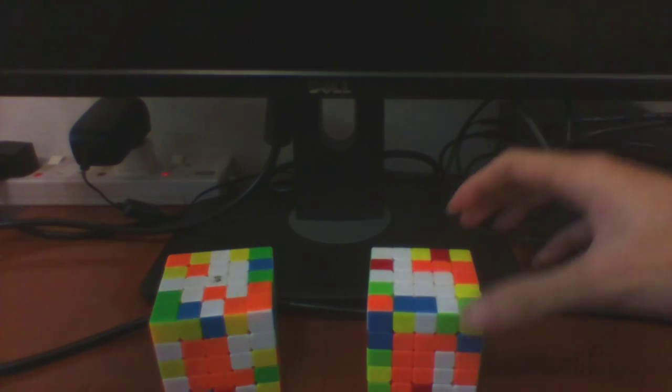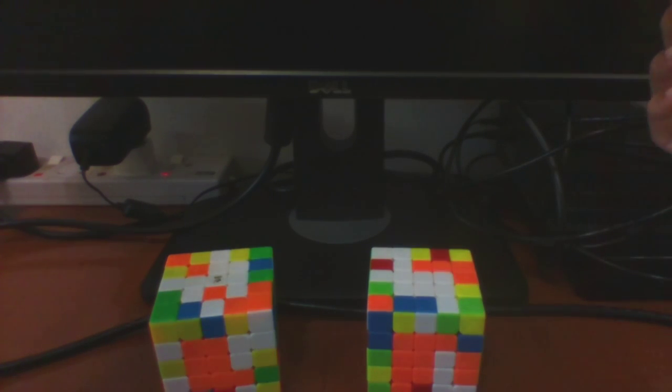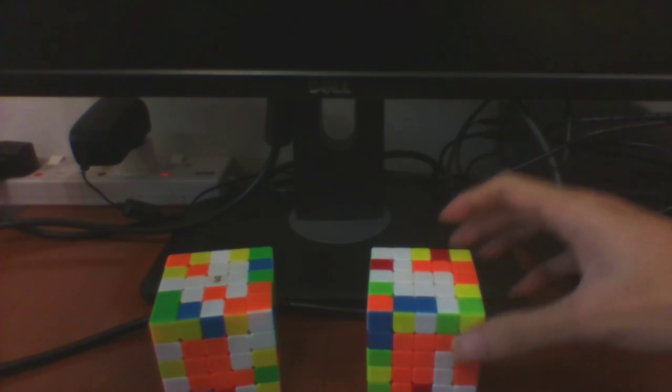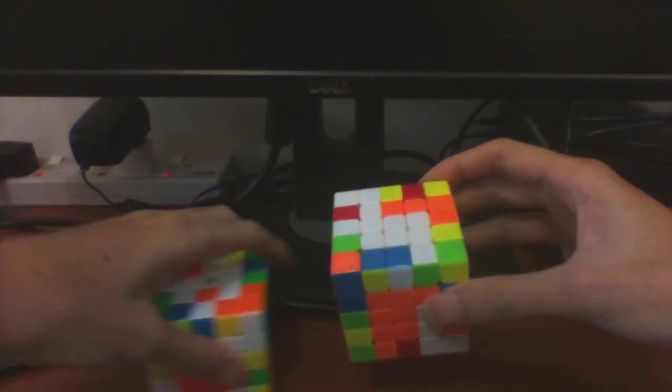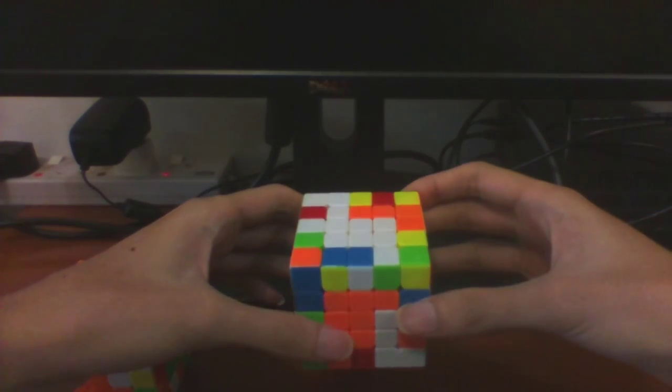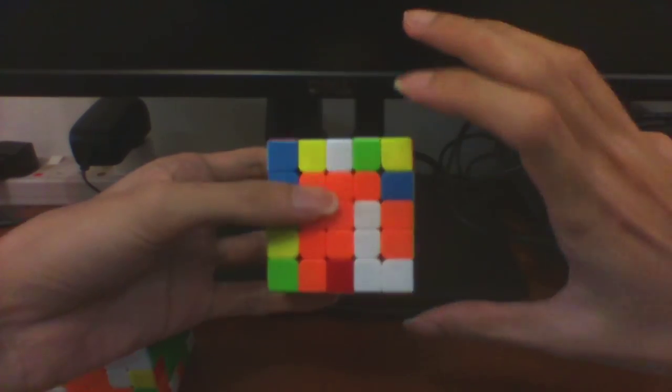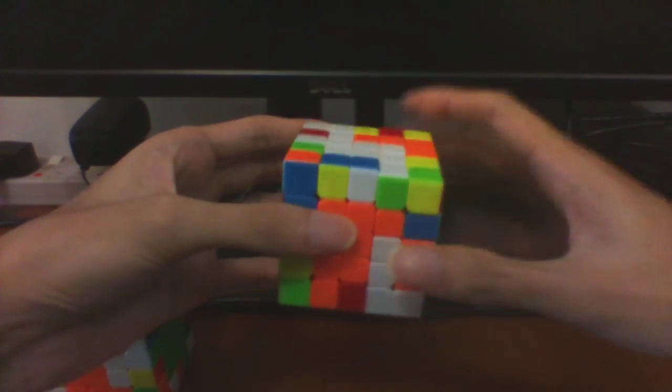Today we'll look at two 5x5 plus 2 center cases which are not so obvious solutions. The first one we'll look at is this case. This case requires 7 or 8 moves to solve if we restrict ourselves to R and U moves.